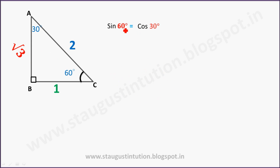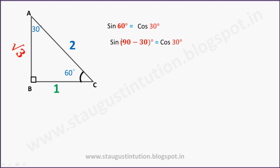Sin 60° equals cos 30° because 60° and 30° are complementary angles — they add up to 90°. So we have the important relation: sin(90° − 30°) = cos 30°.